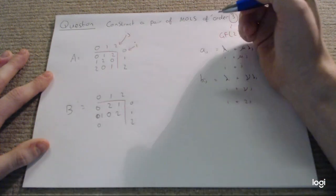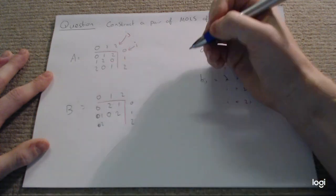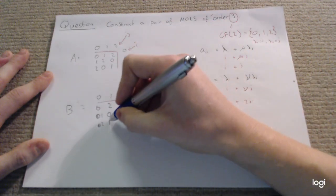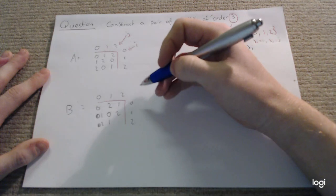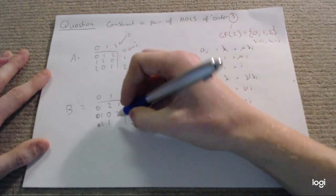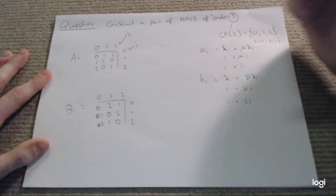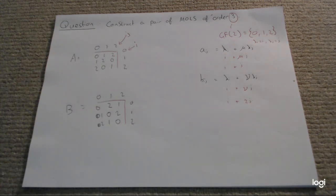2 plus 0... what am I doing? There's 2. 2 plus 2 lots of 1 is 4, which is equivalent to 1, and 2 plus 2 lots of 2 is 6, which is equivalent to 0. So there's our second Latin square.